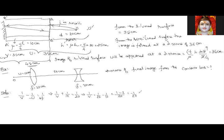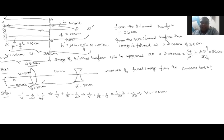The image of the convex lens is at -20 centimeters, meaning it forms on the same side as the object. This image behaves as the object for the concave lens. The object distance for the concave lens is 60 + 20 = 80 centimeters. The concave lens has focal length -30 centimeters.